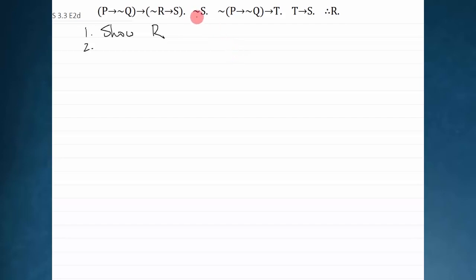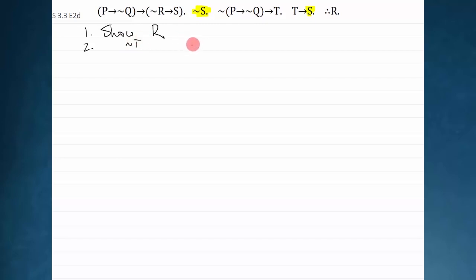Looking at the first obvious thing I can do: over here I have not s, and over here I have t arrow s. I realize that I have the negation of the consequent — I always have to hunt around and look for these things. I have the negation of the consequent of a conditional, so I can immediately apply modus tollens and get not t. Premise 2, premise 4, modus tollens.